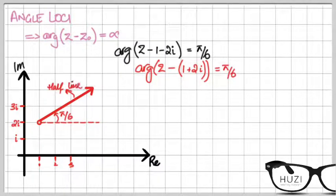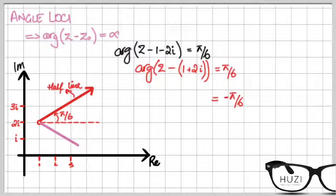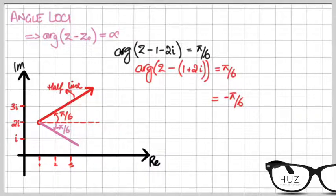Now say if the angle was minus π/6 — that would have looked like this, where this argument would have been minus π/6. The dotted line is your reference point and from this point you sketch the angle. We know from previous videos that the principal argument is from minus π to plus π.